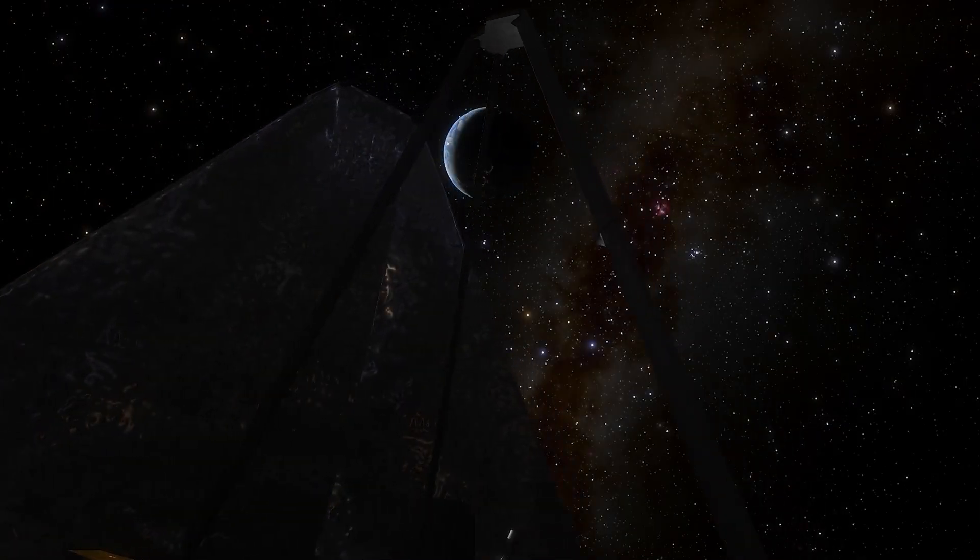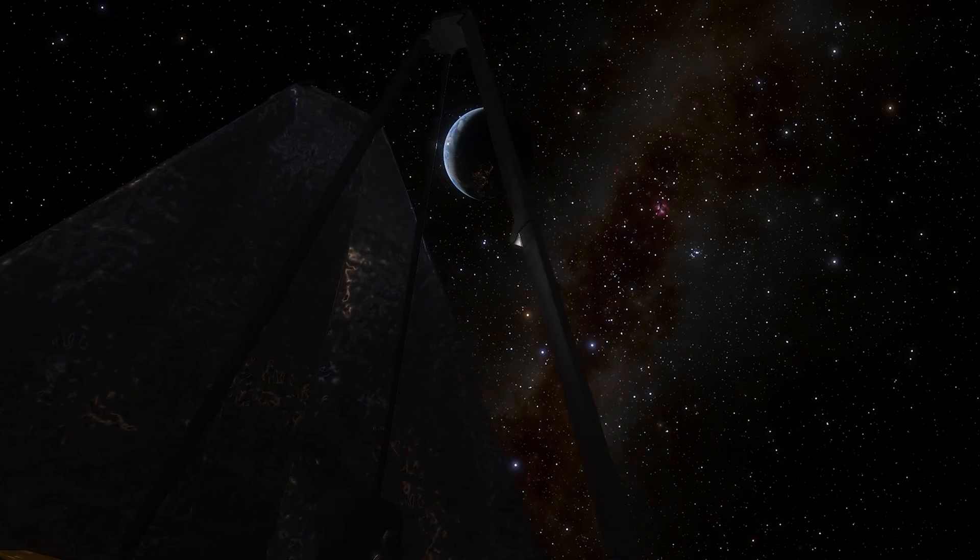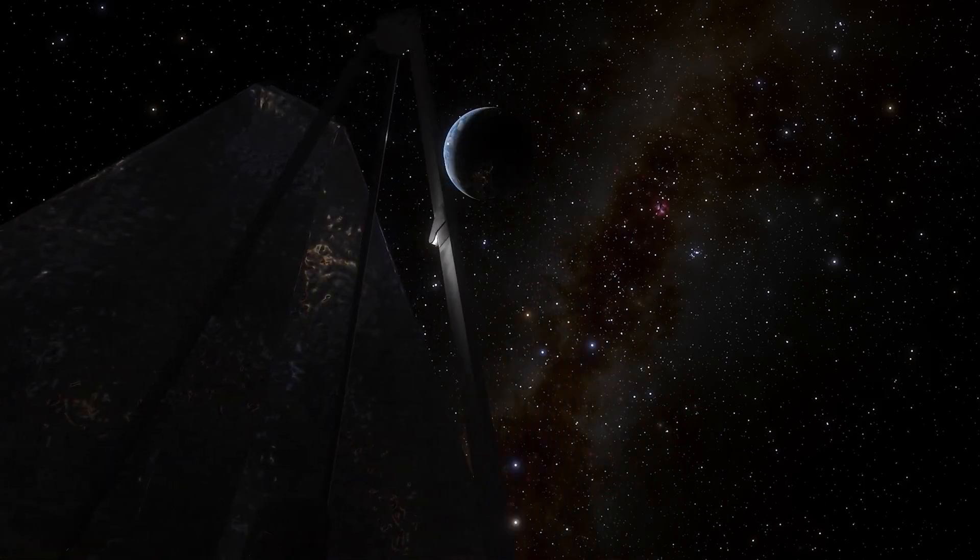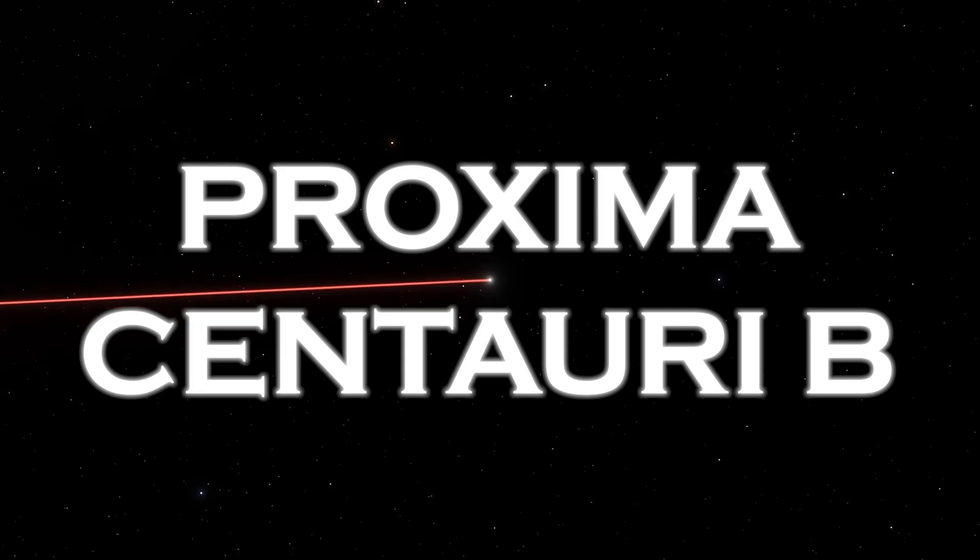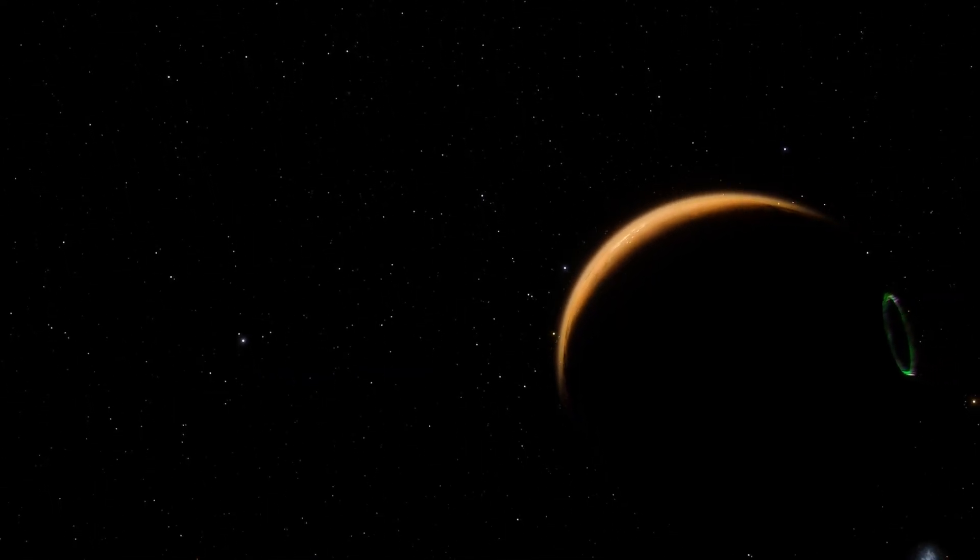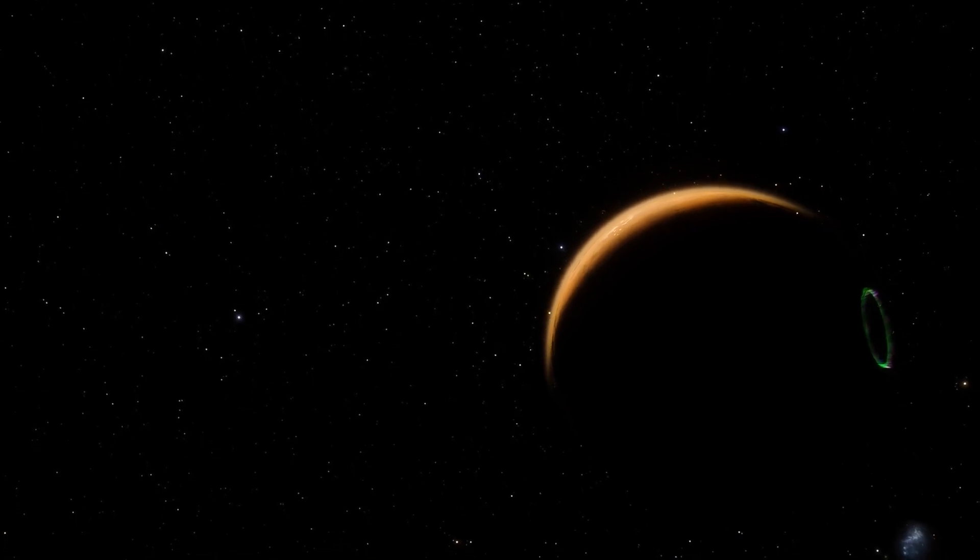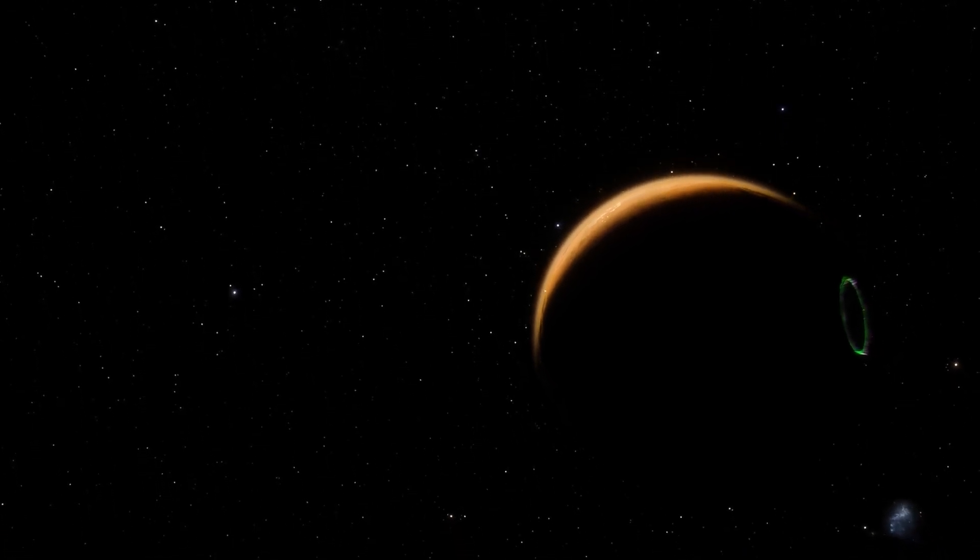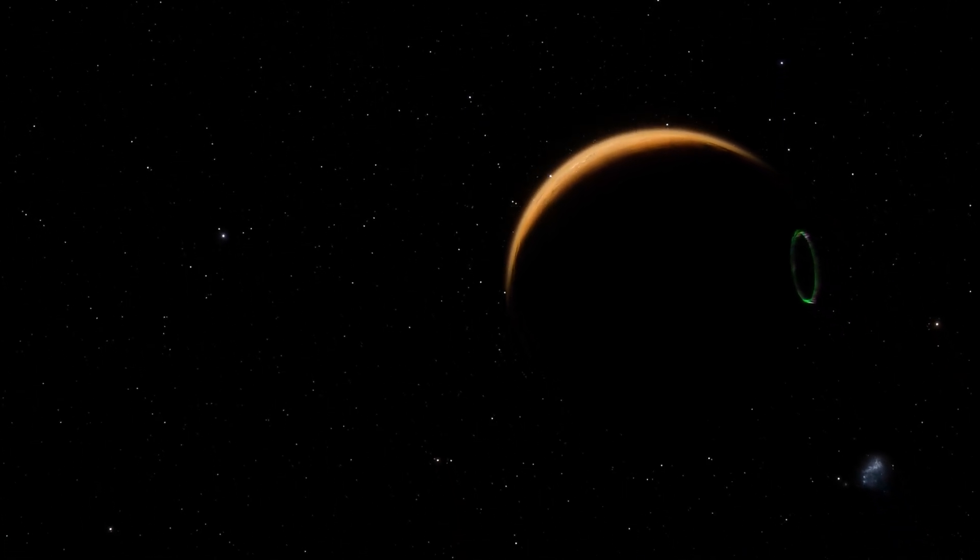While exploring the cosmos and transmitting critical data back to Earth, the telescope observed unique urban lights coming from the exoplanet Proxima Centauri b. These lights, as their name suggests, appear to illuminate a distant city.